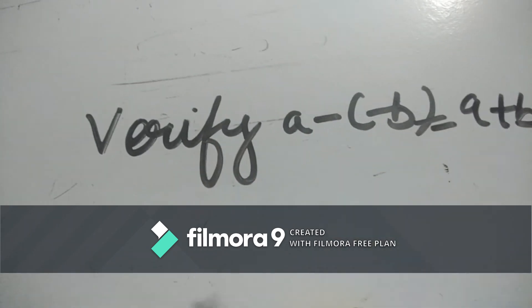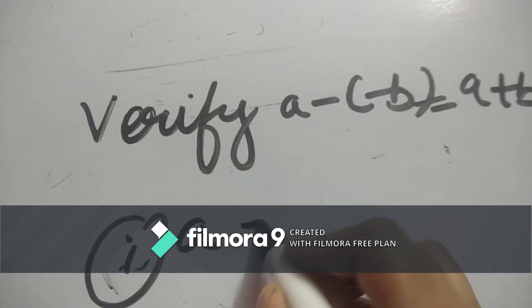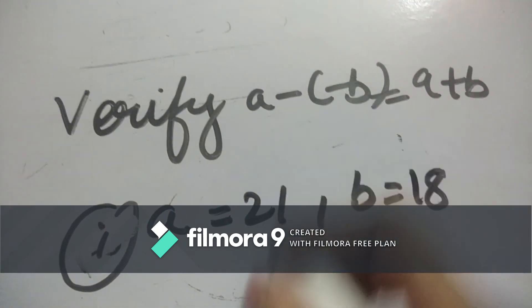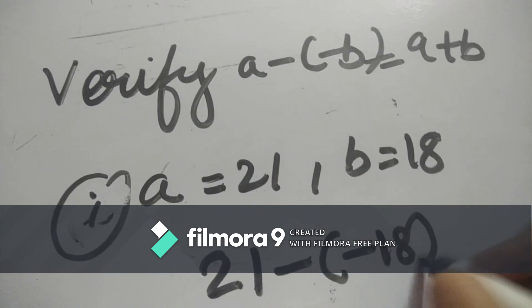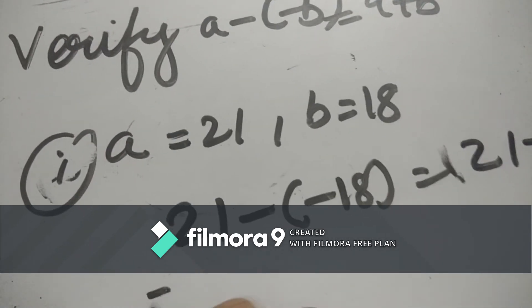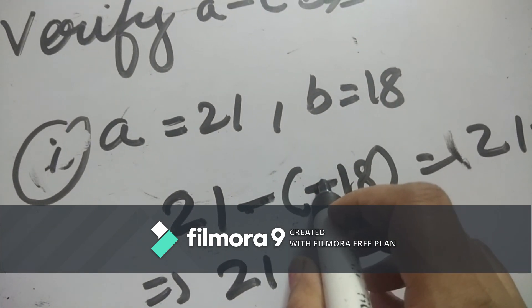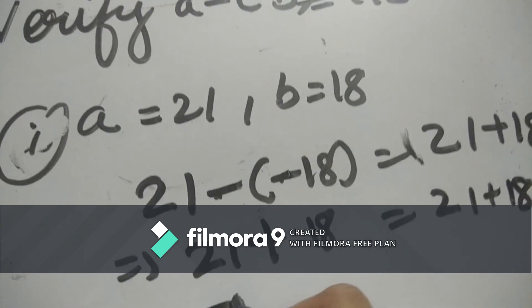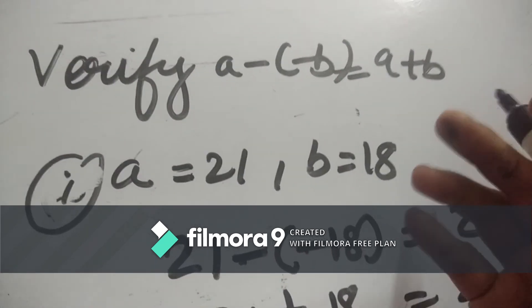So left side: 21 minus (minus 18). Minus multiplied by minus becomes positive, so it becomes 21 plus 18, which equals 39. Right side: a plus b equals 21 plus 18 equals 39. Both sides are equal, so the equation is verified. In the same way we will solve the remaining questions.